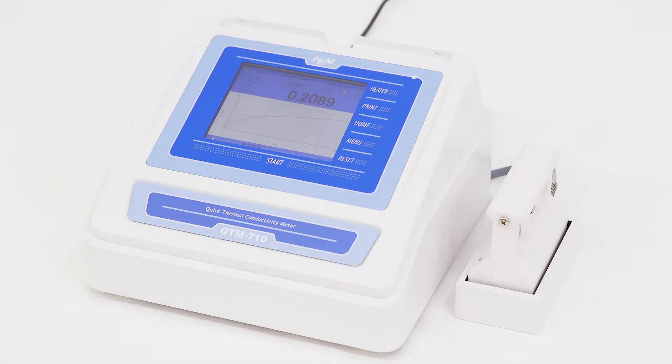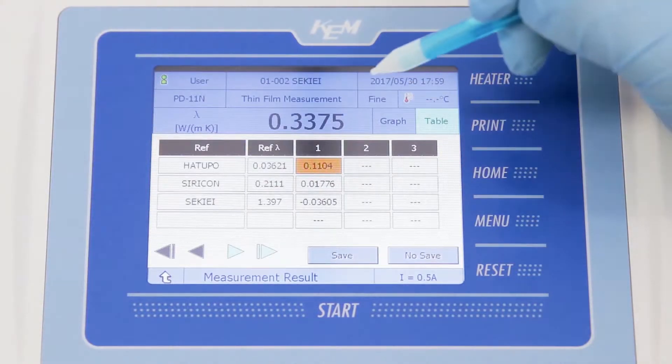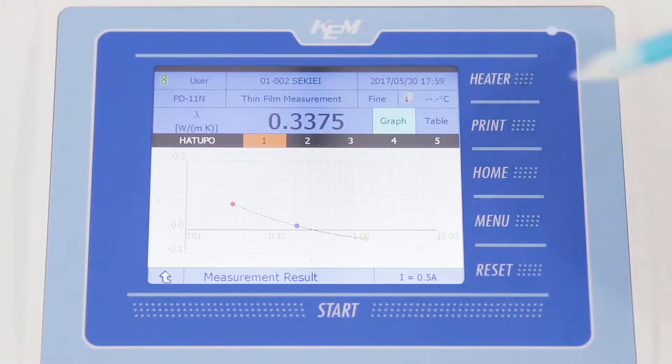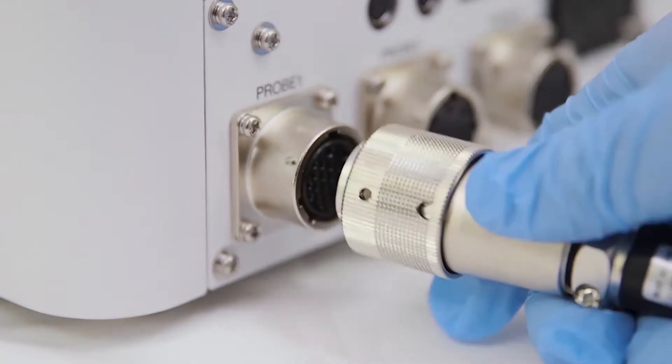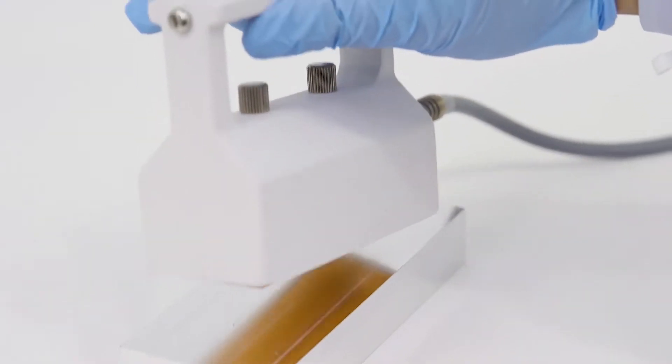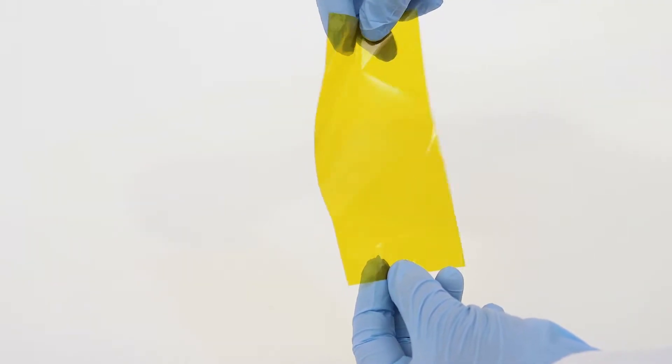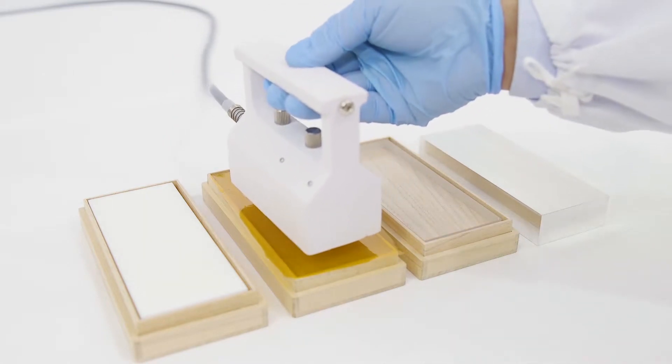It also allows you to quickly display the operation menu and any necessary information. The QTM-710 allows you to measure blunt samples or films with various types of connected probes in direct succession without the need for probe substitution.